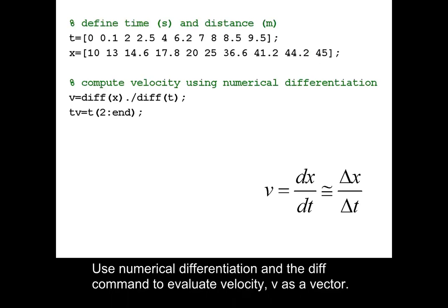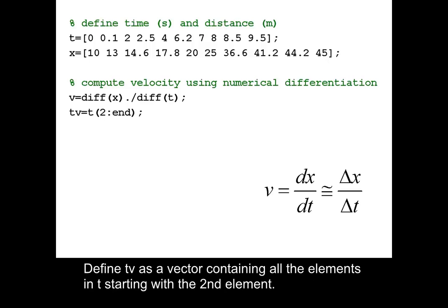Use numerical differentiation and the diff command to evaluate velocity v as a vector. Define tv as a vector containing all the elements in t starting with the second element.